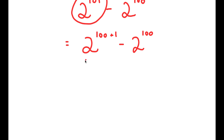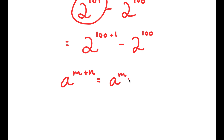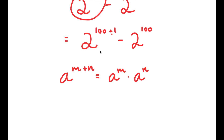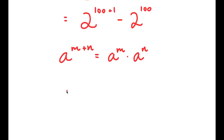The reason I did that is because now I can use this property that states that a to the power of m plus n is equal to a to the power of m times a to the power of n. So 2 to the power of 100 plus 1 is going to equal 2 to the power of 100 times 2 to the power of 1.